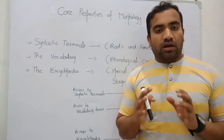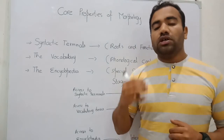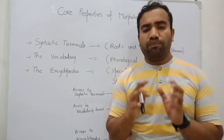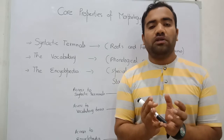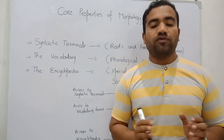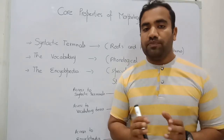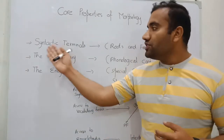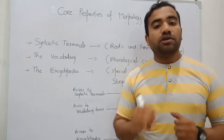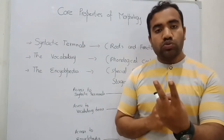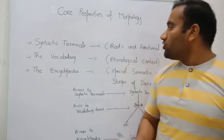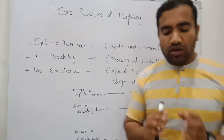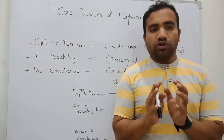This is a simple idea about the internal operations and things involved within morphology and its basic core properties. At this point, regarding syntactic terminals, there are two types: the first is roots, and the second is functional morphology.